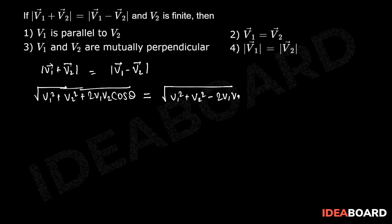Now squaring both the sides and cancelling the terms we can write that 4 v1 v2 cos theta is equal to 0, or we can write cos theta is equal to 0, or we can write theta is equal to 90 degrees.